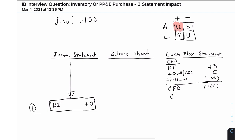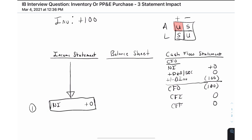The next item on the cash flow statement is cash flows from investing — we haven't purchased any property, plant, or equipment, so that's zero. Cash flows from financing: we didn't have any ins and outs from debt or equity, so that's zero as well. We get down to our change in cash, and the net impact on cash is negative $100. That completes step two.